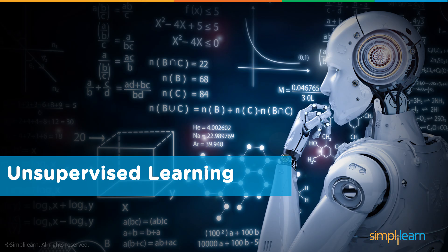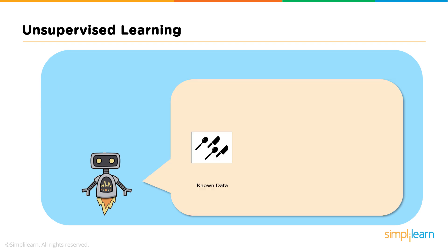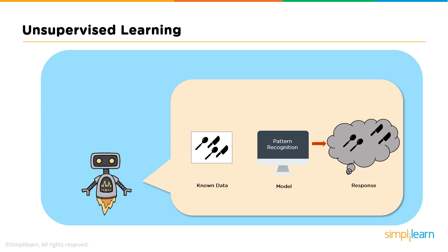Now let's talk about unsupervised learning. In unsupervised learning, there is no supervision — no training will be given to the machine, allowing it to act on data which is not labeled. The machine tries to identify patterns and gives the response. Taking a similar example as before, but this time we do not tell the machine whether it's a spoon or a knife. The machine identifies patterns from the given set and groups them based on their patterns, similarities, etc.